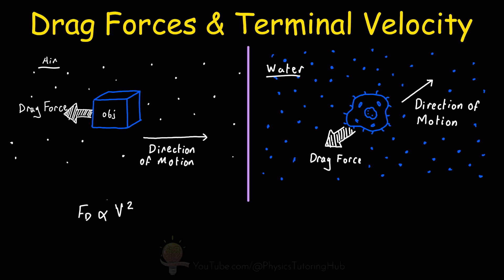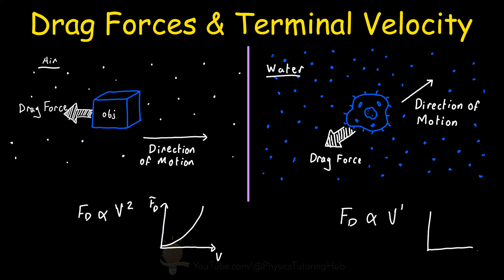As the velocity increases, the force of drag on that object will increase by the second power. But if we're dealing with smaller objects like a bacterium or pollen grain in a medium denser than air — for example water — and these objects are moving relatively slowly, then the drag force is proportional to the first power of the velocity. In other words, as the velocity increases, the drag force will increase by the same amount.